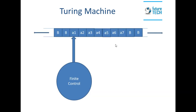A Turing machine consists of an infinite tape which is infinite in either direction. When considering the Turing machine as an I/O device, we consider this tape as infinite in both directions. When considering it as an accepting device, we consider the tape infinite in one direction. It can be proved that an infinite tape in either direction is equivalent to an infinite tape in one direction.